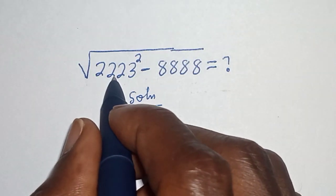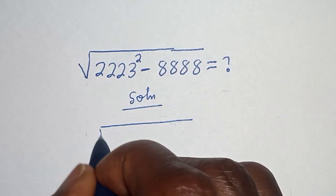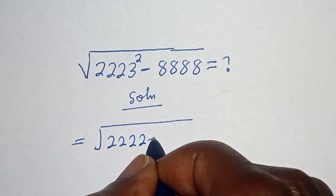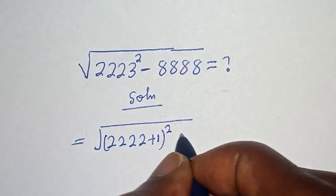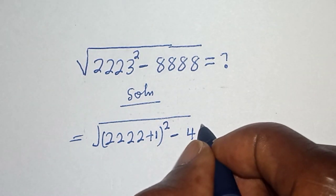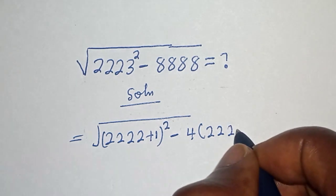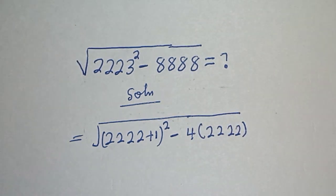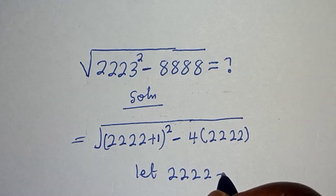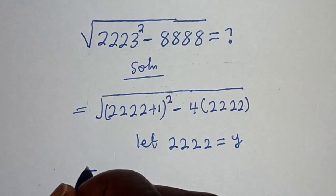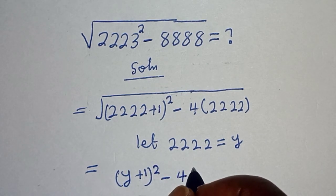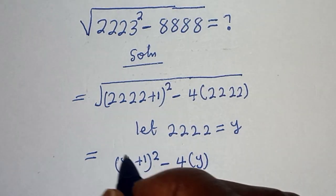We have square root of 2 to the power, which can be written as square root of 2 plus 1, all squared, minus 8. And 8 can also be written as 4 multiplied by 2. Let's say 2 to the power is equal to y. Then this is equal to square root of y plus 1 squared minus 4 times y.